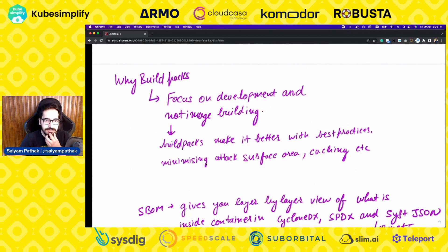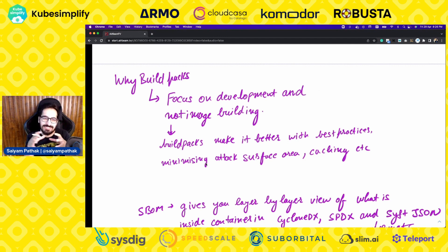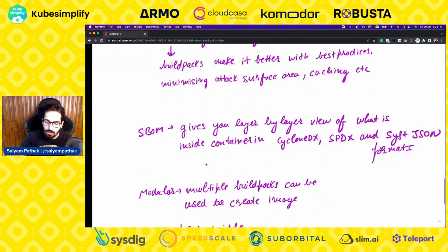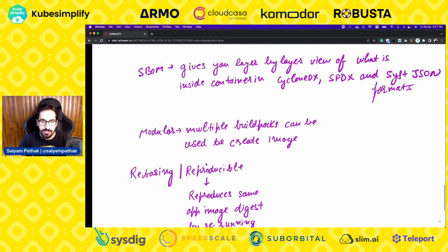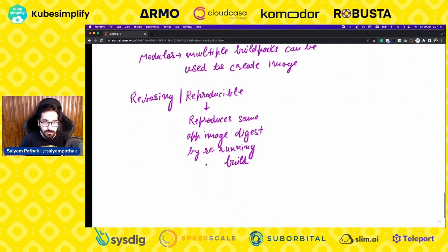Other key features: developers focus only on development, not image building. Buildpacks enforce best practices, minimize the attack surface, and provide caching and rebasing mechanisms. It provides a software bill of materials — Cloud Native Buildpacks give you layer-by-layer information of what is inside the container in CycloneDX, SPDX, and Syft JSON formats. It also follows a modular approach where multiple Buildpacks can be used to create one image.